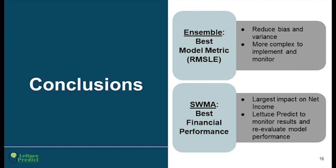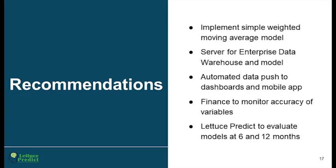In conclusion, we have two different winners: the ensemble method gave us the best model metric in terms of accuracy, but the simple weighted moving average resulted in the highest net income, making it the best financial performer. Our recommendation is to implement the simple weighted moving average model since net sales is key and we don't want to leave money on the table. Additionally, we want to use a server to store and run these models in real time and push results to the dashboard application, with finance modeling accuracy of the variables in six and 12-month intervals.